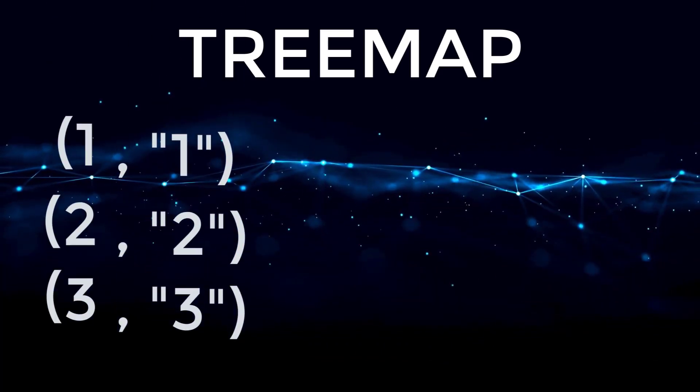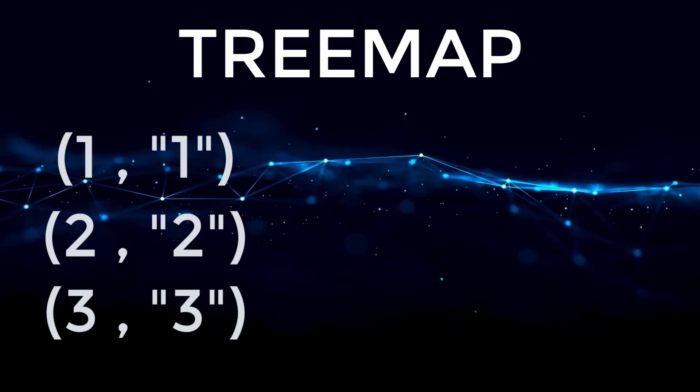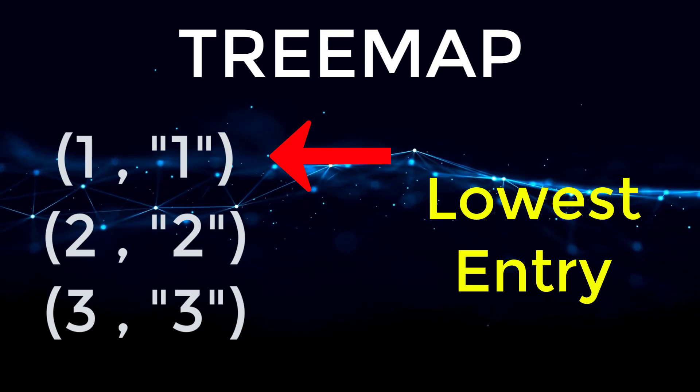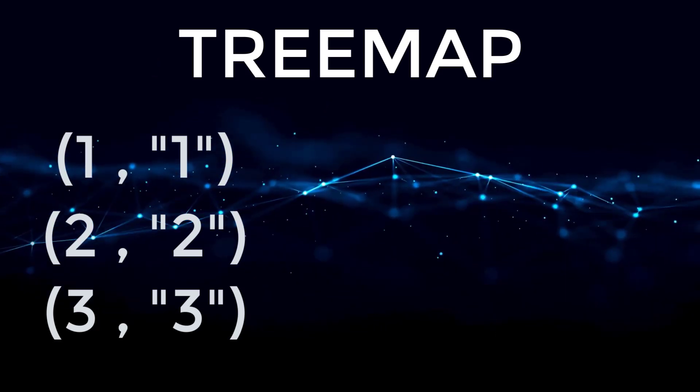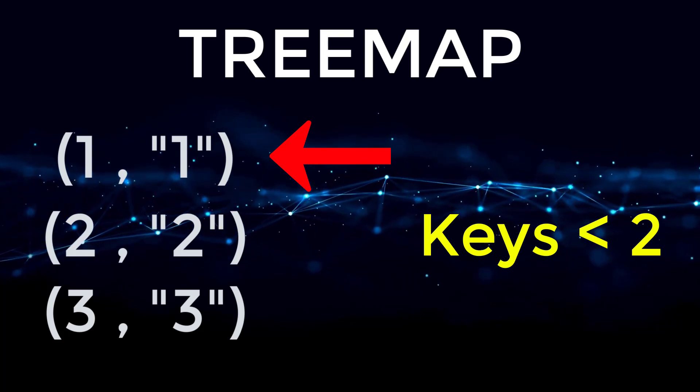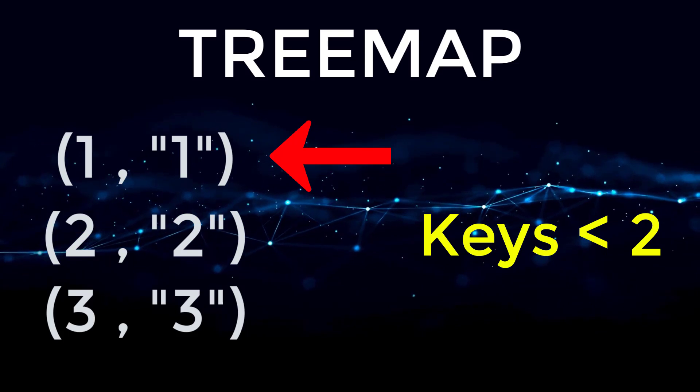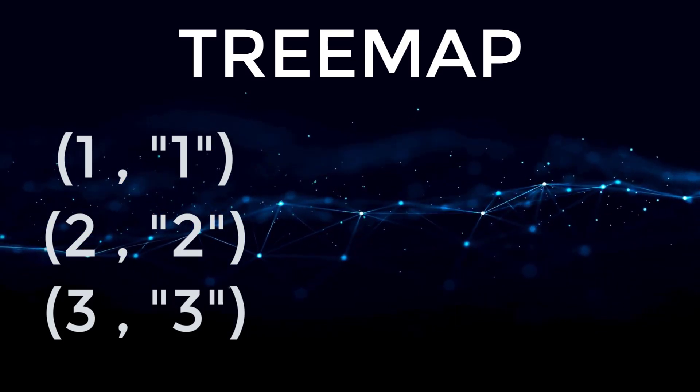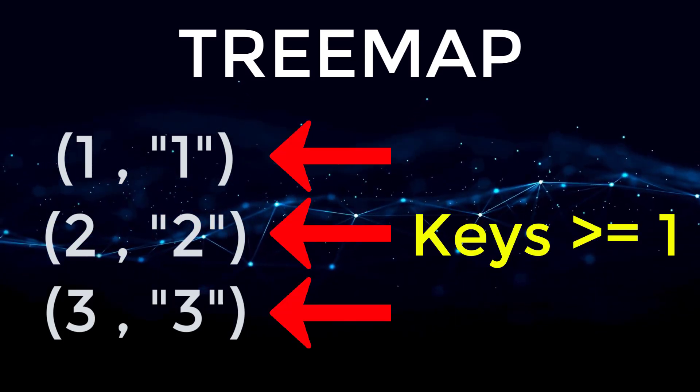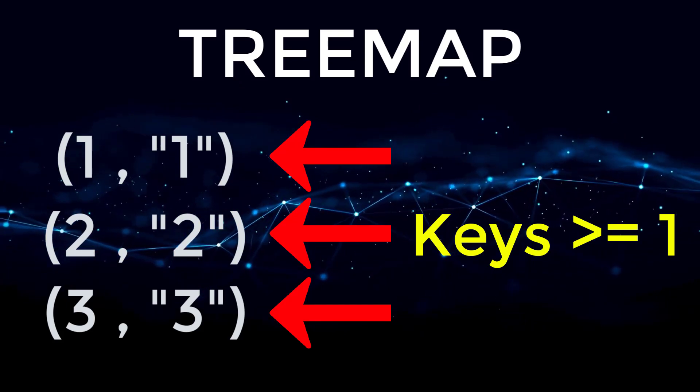For example, let's say I added the following entries inside of my tree map. If I were to say, find me the first key, which is the lowest, that would return one. I could also say, find me all keys that are less than a number. So I could say, find me all numbers less than two, that would just return entry one. I could also say, find me all keys greater than or equal to one. So that would return all of our entries in our tree map.